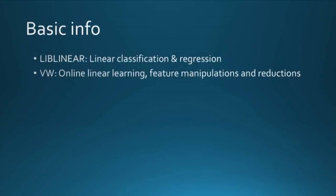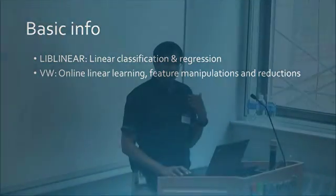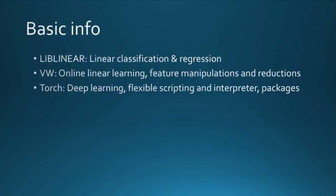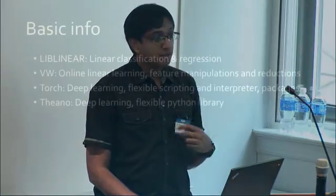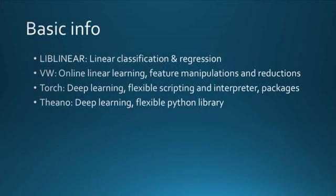We saw Vowpal Wabbit, which is very much built around online linear learning, but provides a whole bunch of other feature manipulations and reductions for other problems. Torch is, I would say, much more deep learning centric, but the scripting and interpreter provide it a lot of other flexibility and there's a wide range of packages. Theano again is more deep learning centric, but the Python library makes it a fair bit more flexible.